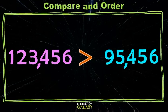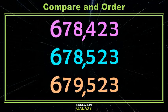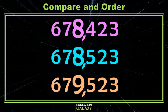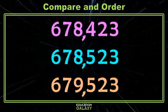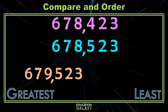Let's look at ordering. Here I have three numbers. Again, I will start on the left with the leftmost place value. I have a six for everybody in the hundred thousands, so we move on. I have a seven for everybody in the ten thousands, so we move on. I have eights and nines in the thousands — here I have a difference. Nine is bigger than eight, which makes the 679,000 number the largest of them all. So if I'm ordering from greatest to least, the 679,000 number is the biggest, so we'll put it on the left.